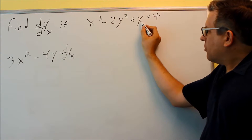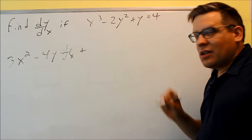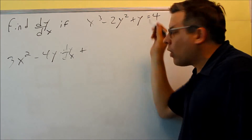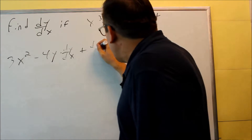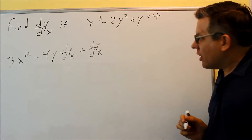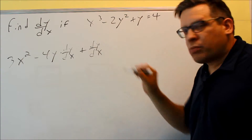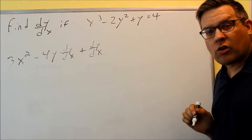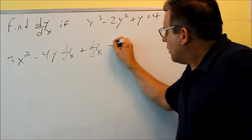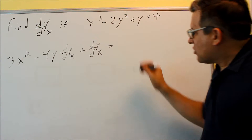Moving on to the next term: it's plus y. If I want to write the derivative of y, it's dy/dx. Whenever you have a y by itself, it automatically turns into a dy/dx. I have to account for that derivative — I can't just ignore it or leave it as plus y. I've got to do the derivative of every single term all the way across. Over here we have a 4, and the derivative of any constant is always going to be 0.